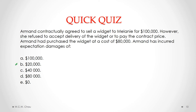The answer here is B, $20,000. We get to $20,000 by calculating expectation damages as equal to the expected benefit minus expected costs. The expected benefit Armand expected to receive if the contract had been performed would have been $100,000 — the amount he would have received from Melanie. His expected costs are $80,000, the cost of the widget. So it's $100,000 minus $80,000, which gives us $20,000.